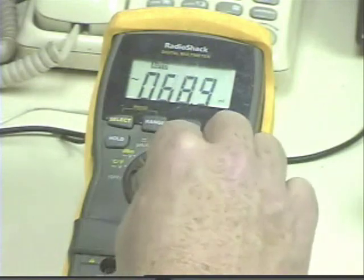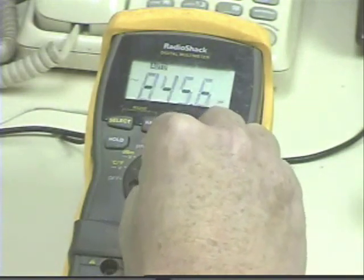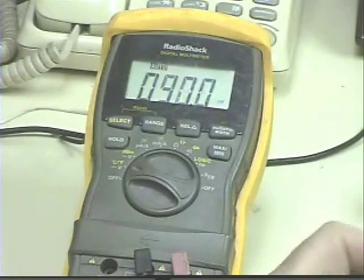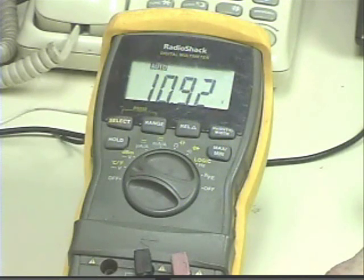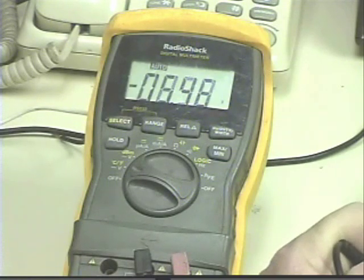We're going to switch over to DC and read the output across the load resistor. In this case, I'm reading 10.92 volts. If I reverse my leads, red to negative and black to positive,